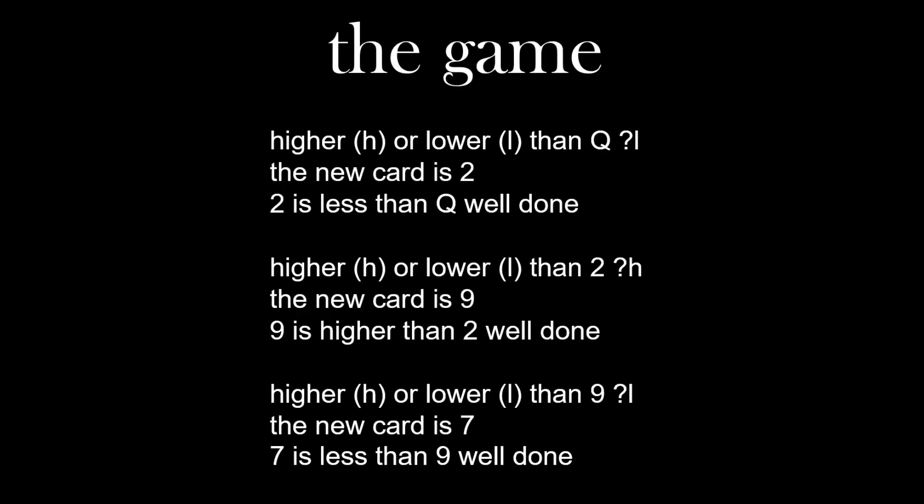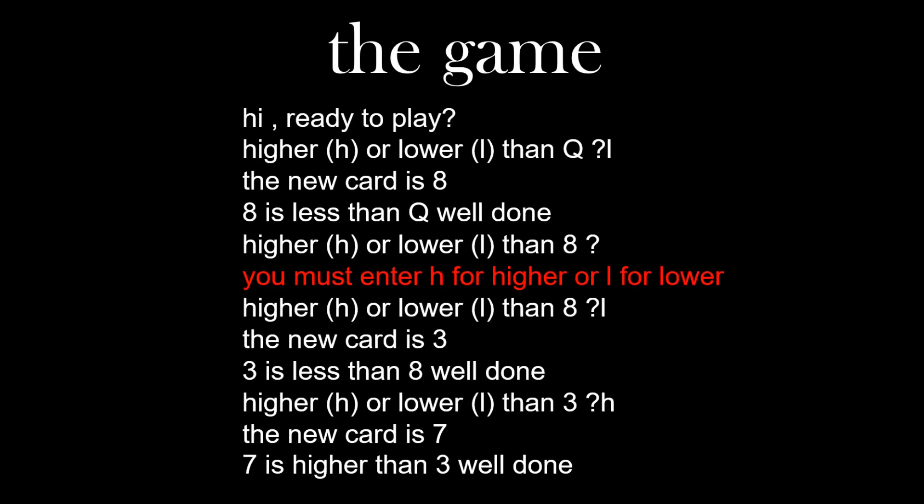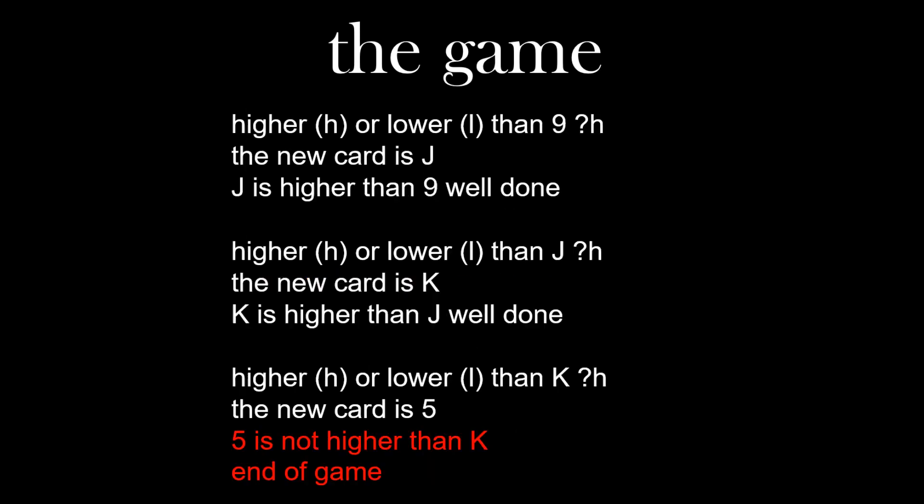Let's look at the game. Higher or lower than a queen? Lower. Two. Well done — two is less than queen. Higher or lower than two? Higher. The new card is nine — nine is higher than two. Higher or lower than nine? Lower. The new card is seven — seven is lower than nine. Well done. If the user didn't put in L or H, you need an error message to remind them to put in L or H. Higher or lower than the king? They put H for higher but the card is five — five is not higher than king, end of game. So you must check if the answer is correct, and if not, end the game.